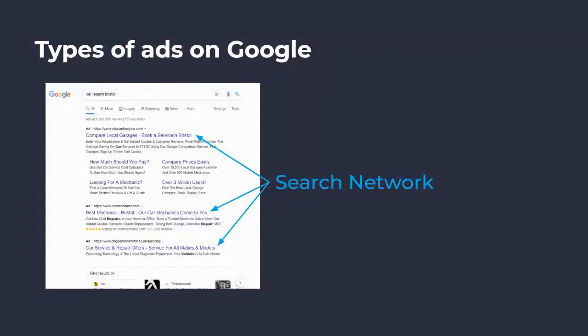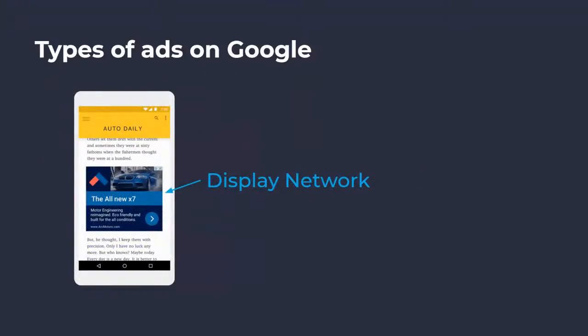So this example here shows a fairly typical Google search ad, which I'm sure we're all very familiar with. We probably see these on a regular basis. These are probably the most common form of PPC ads on Google and they appear as text ads within the search results page. Next up are display ads — probably quite familiar with seeing these across the internet when you're browsing the web. These are great for retargeting people who have already been to your website, but also great for brand awareness as well.